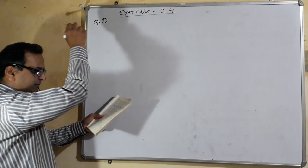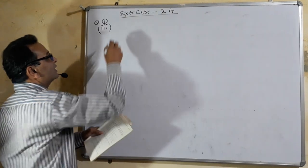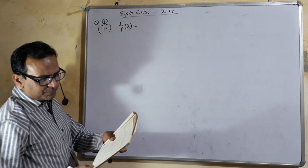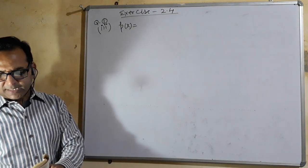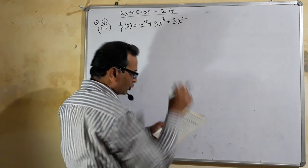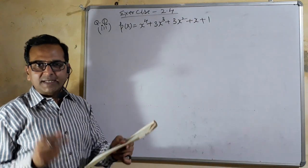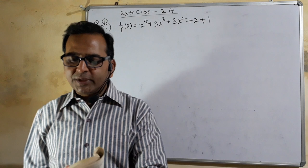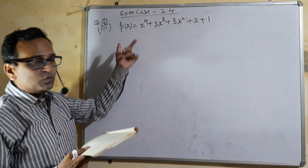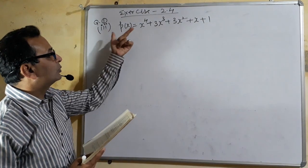The polynomial P(x) for Part 3 is: P(x) = x⁴ + 3x³ + 3x² + x + 1. The question says: determine which of the following polynomials has x + 1 as a factor. There are four parts in Question 1; we have started the third part. We need to check whether the divisor x + 1 is a factor of this polynomial or not.